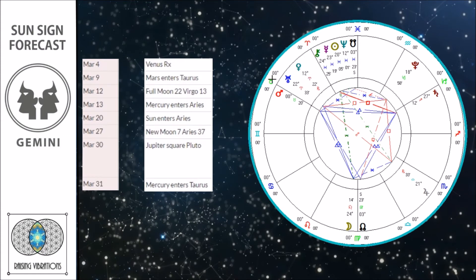Taurus and Libra are co-ruled by the planet Venus in evolutionary astrology — one represents an internal relationship to yourself and the other the relationship to others. Because Venus has the attention this month, the spotlight is on Venus. We're paying attention to Mars moving into Taurus as a natural way to initiate what you need to let go: things not supporting your joy and essential needs, and your inner relationship to yourself.